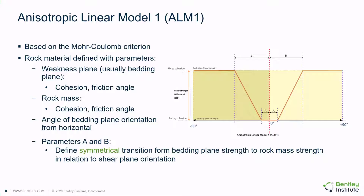Friction angle 1 (phi 1) is defined as the weakness plane friction angle — usually the bedding plane friction angle — corresponding to the minimum shear strength, and may be entered in terms of the plasticity index. Friction angle 2 (phi 2) is defined as the rock mass friction angle, corresponding to the maximum shear strength, and may also be entered in terms of plasticity index. The A and B parameters define a linear transition from bedding plane strength to rock mass strength with respect to shear plane orientation.